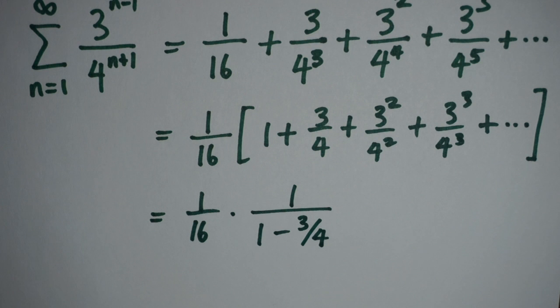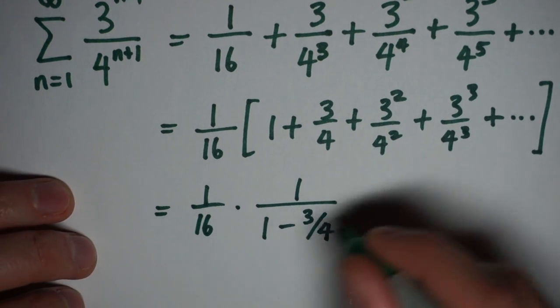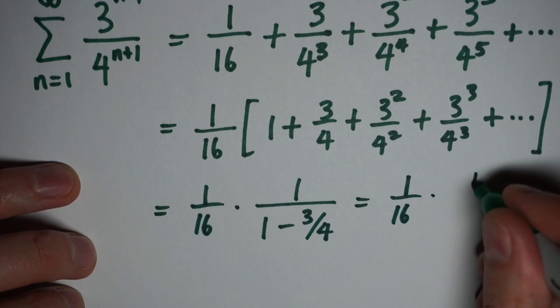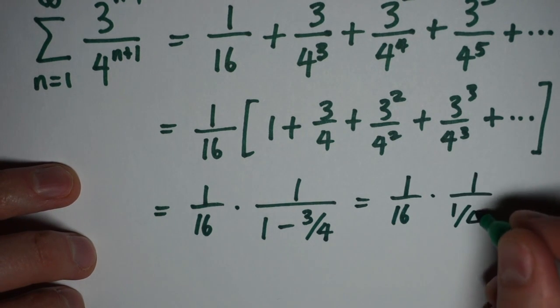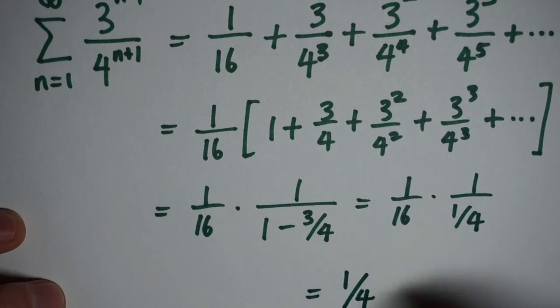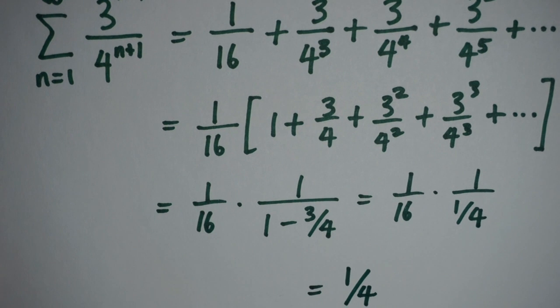When I go through the process of simplifying this complex fraction now, I have 1 16th times 1 over 1 quarter, and 1 over 1 quarter is the same as 4. So I end up with 1 16th times 4, which is 1 quarter. So my total sum is 1 over 4.